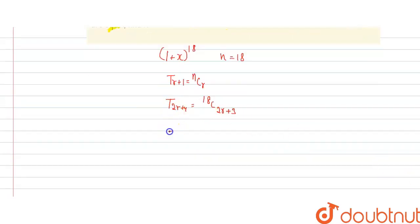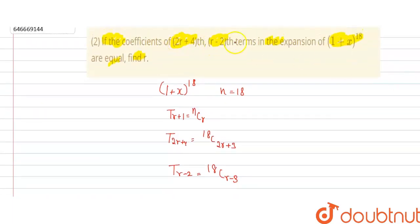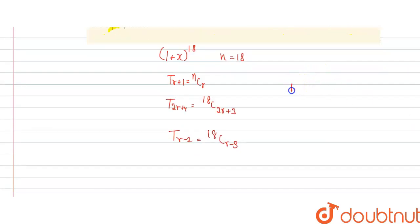Similarly, the value of T(R-2) will become 18C(R-2-1), which is 18C(R-3). Now we are given that the coefficients of these two terms are equal, so we can say that 18C(2R+3) is equal to 18C(R-3).